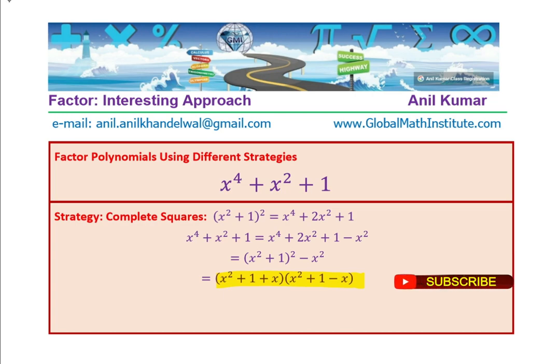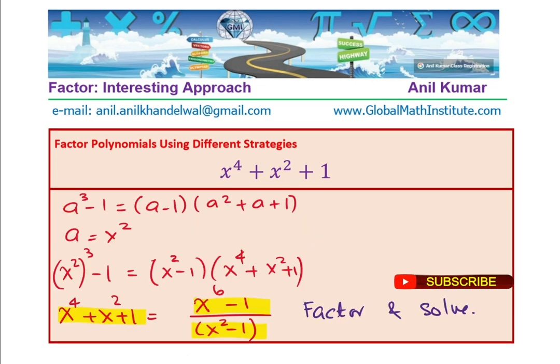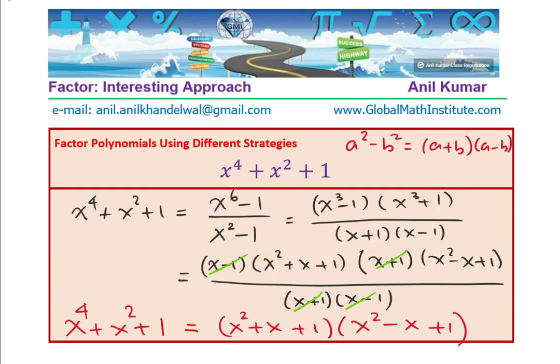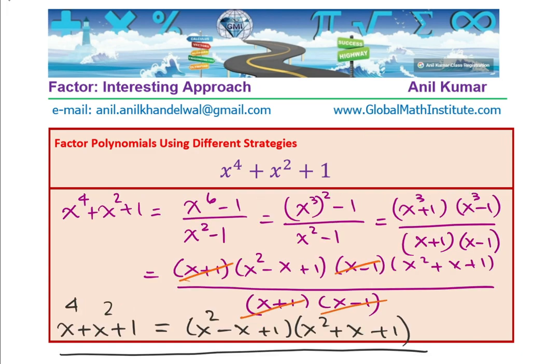And then, we apply the method for difference of cubes in which we also got the same expression x to the power of 6 minus 1 over x square minus 1 which was simplified to give the result just as we have done just now.